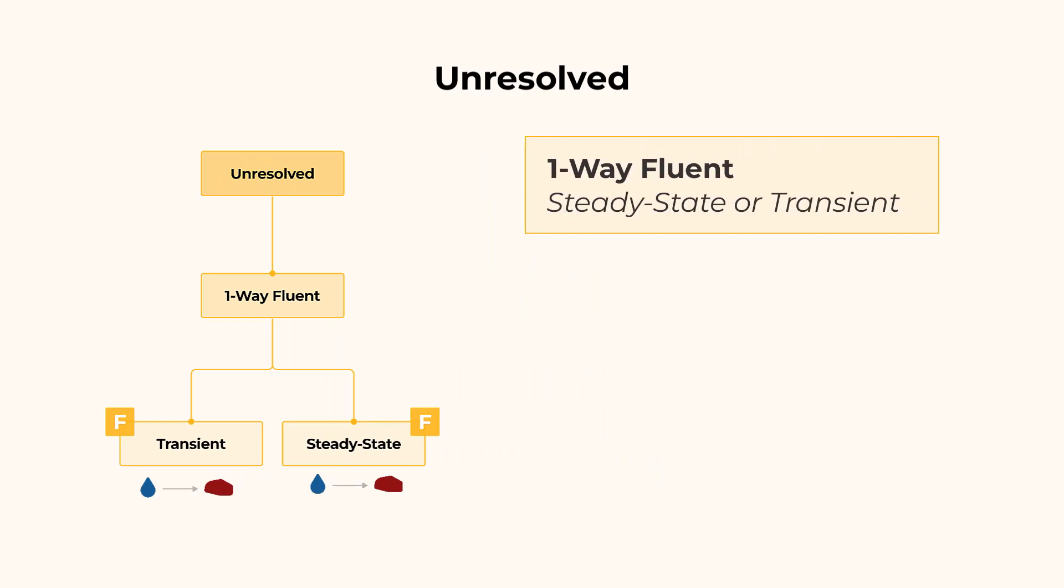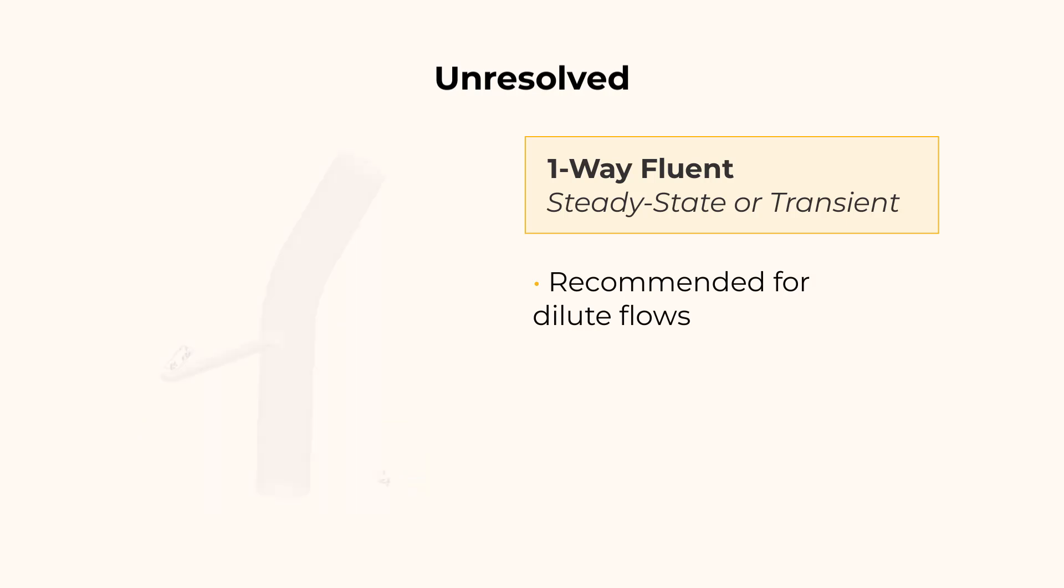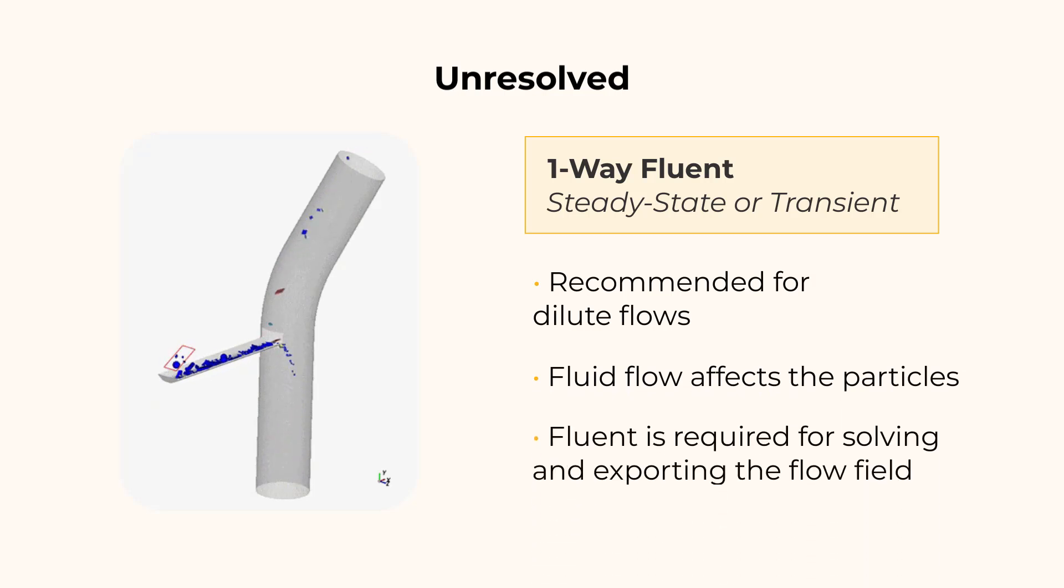The unresolved method does not resolve the fluid flow around particles. It approximates the interactions between fluid and particles using averaged models and empirical relationships. The one-way Fluent covers steady state and transient flows. This will vary according to the case you set up in ANSYS Fluent. It is recommended for dilute flows, meaning a lower concentration of particles in the fluid. The fluid flow affects particles, and not the other way around. ANSYS Fluent software is required for solving and exporting the flow field.